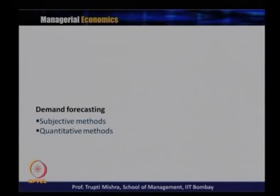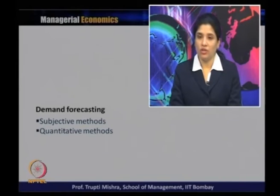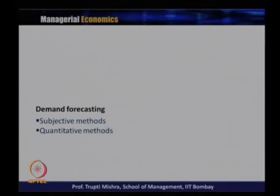When price changes, it has two effects: the income effect and the substitution effect — together forming the price effect. The concept of consumer surplus was discussed — it is the difference between what the consumer is willing to pay and what they actually pay. Demand forecasting was also covered, including the need for forecasting, steps involved, and two methods: qualitative or subjective methods such as consumer opinion surveys, market simulation, and test marketing; and quantitative methods including the econometric method, trend projection, barometric method, and smoothing techniques.